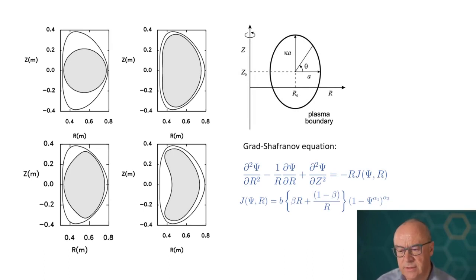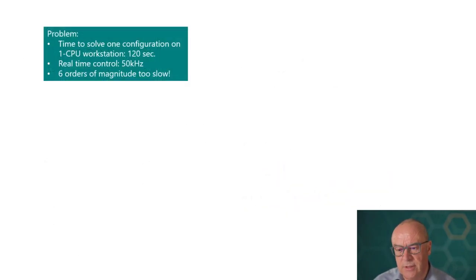So what we're doing here is actually using the results of simulation as training data in order to be able to speed up future calculations. So why are we doing that? We're doing that really to address an important challenge, which is that just solving for one of those configurations 25 years ago would take a few minutes on a high end workstation. And yet what we'd like to be able to do is real time feedback control of the plasma at a frequency of something like 50 kilohertz. And so real time solution of the Grad-Shafranov equations is about six orders of magnitude too slow.